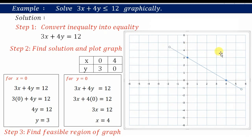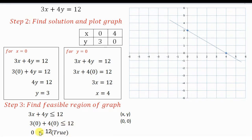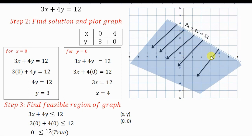Step 3: find the visible region. We pick the inequality 3x plus 4y less than or equal to 12 and choose a point not on the line. The best option is (0, 0). Putting x equals 0 and y equals 0, we get 0 less than or equal to 12 — the condition is true. When the condition is true, we shade towards the origin. So the shaded region is on the origin side of the line.